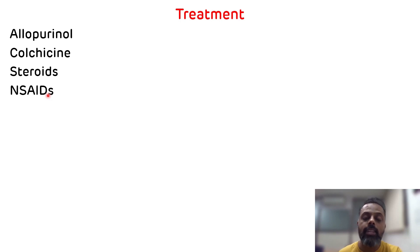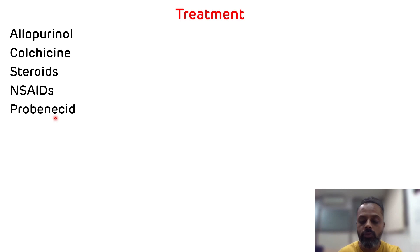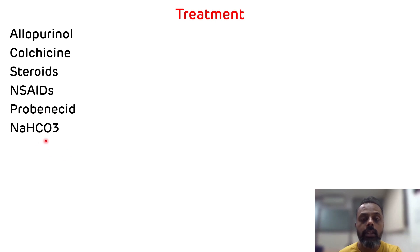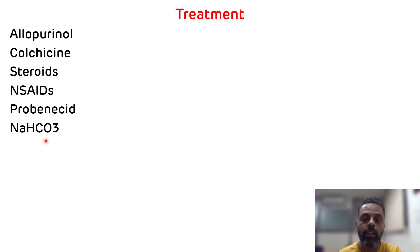Then NSAIDs, which inhibit the cyclooxygenase enzyme. Then probenecid, which is a uricosuric drug that will increase the excretion of uric acid. And lastly, sodium bicarbonate, which will do the alkalinization of urine. That is all about gout.